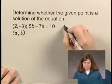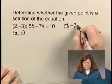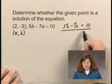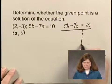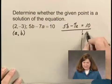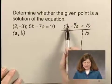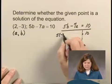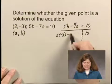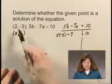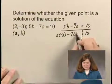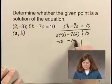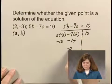So I write my equation: 5B minus 7A equals 10, and I substitute. On this side I have 10. 5 times B would be 5 times negative 3, minus 7 times A would be 7 times 2. This gives me negative 15 minus 14, or negative 29.